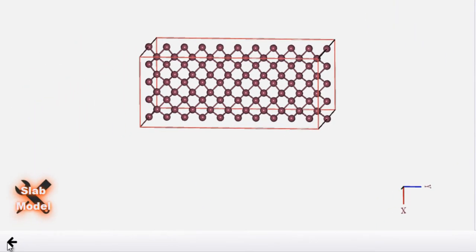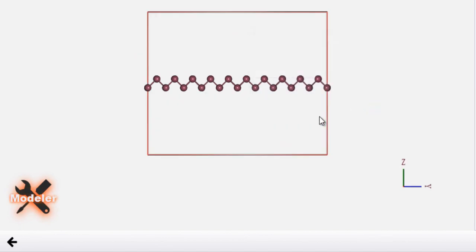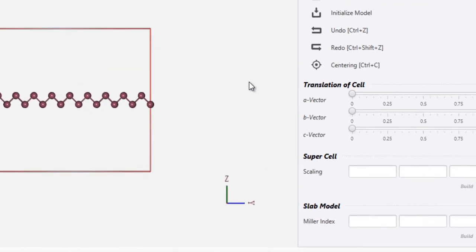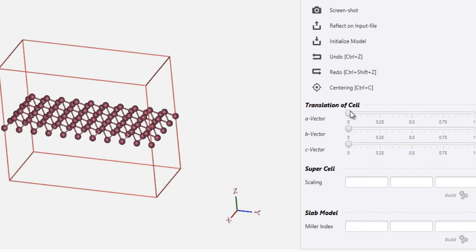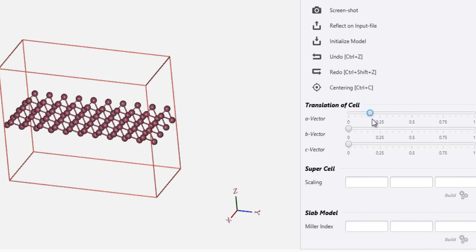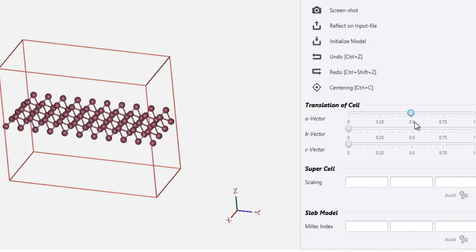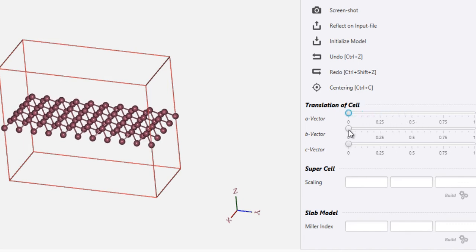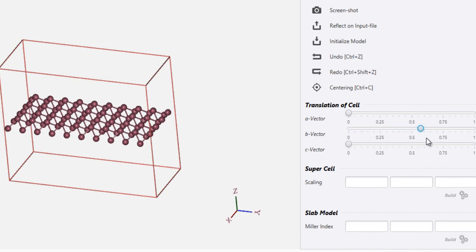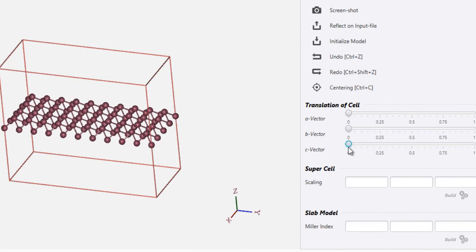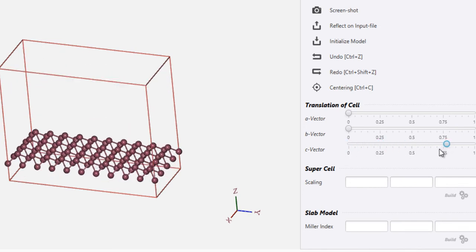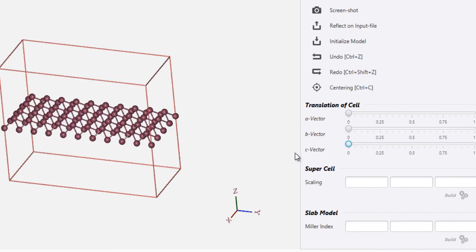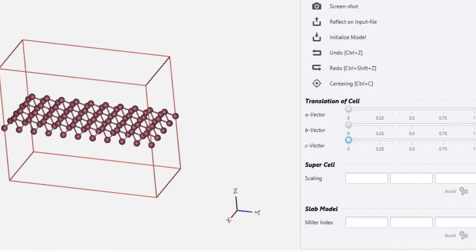So that's the modeling part and one more thing that you can do here is you can even translate your system or the atoms in the cell. So you can just perform a translation along the x-axis by sliding here or you can perform a translation along the y-axis by sliding here and similarly a translation along the z-axis.